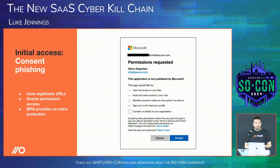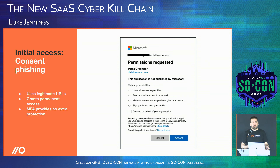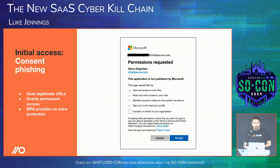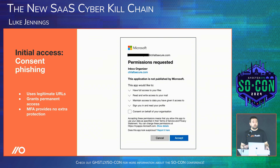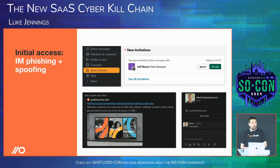Consent phishing is different — you're not looking for credentials or MFA, you're tricking a user into delegating OAuth permissions. You set up a malicious OAuth app and send consent phishing links. It uses legitimate URLs — a legitimate Microsoft or Google URL — so it appears trustworthy. The key advantage is it grants permanent access: it's a delegated permission model, not a temporary password or one-time MFA login. Even if they change their password or reset their MFA, you maintain access via the OAuth app unless someone specifically revokes the OAuth access.